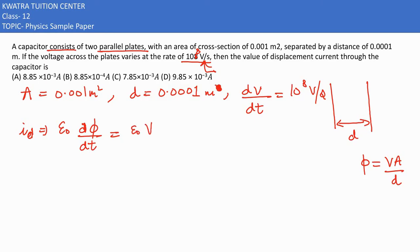divided by d. So if you substitute it, v nahi, v won't come out because dv by dt ki value is already given. A will come out, dv would remain here, dt would remain here, and small d will come out.